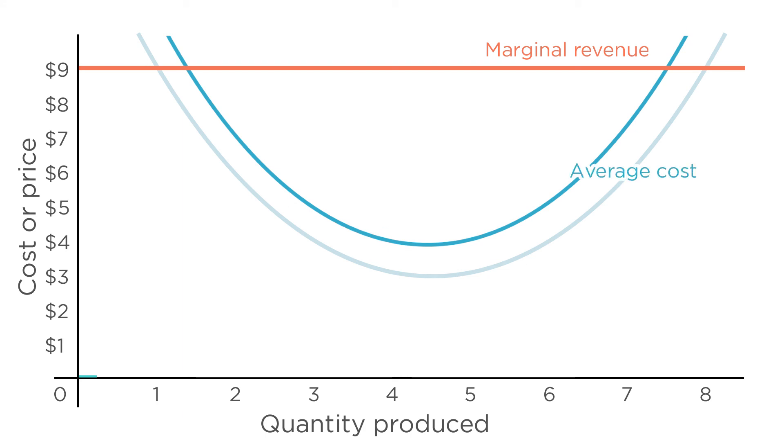Here's average cost. It's a U-shape again, but $1 higher. Marginal costs also shift up by $1. Where should the firm produce?